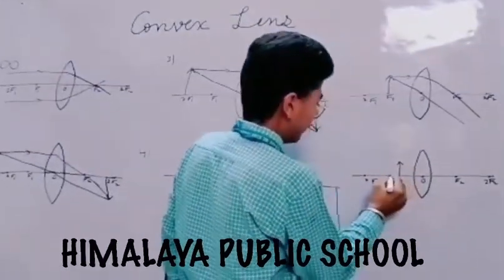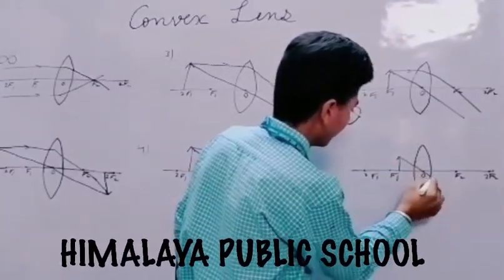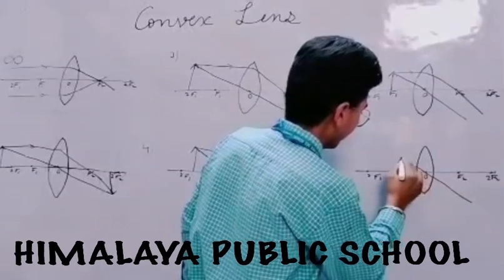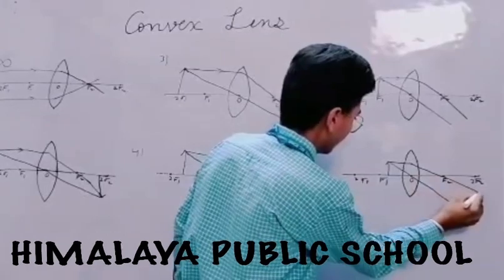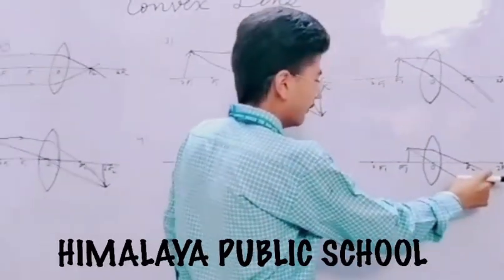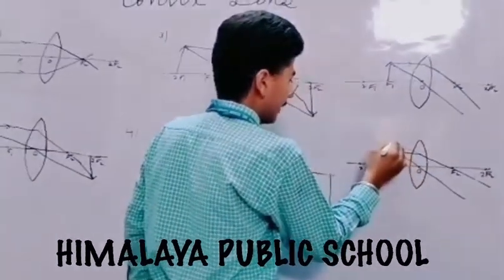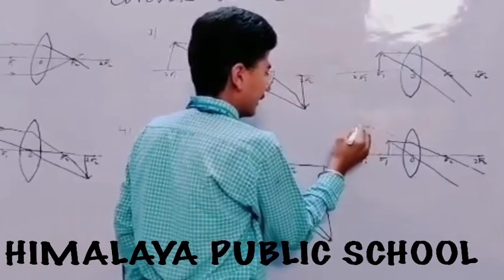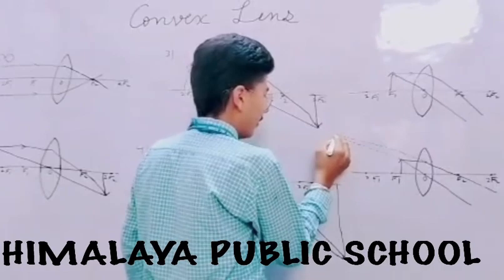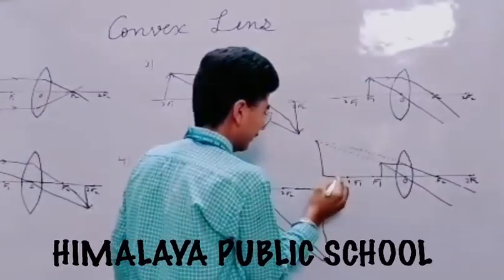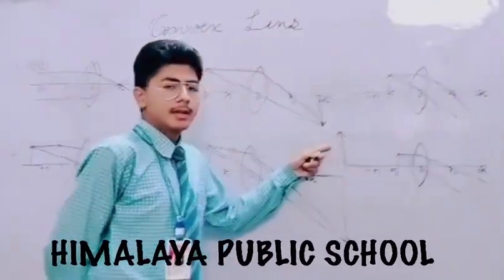The last condition is when the object is placed between the focus and the optical center. The first ray is passing through the optical center and the second ray is coming parallel to the principal axis and passes through the focus. Both rays are diverging from each other; they do not actually meet but appear to meet. Extending both rays, we get that the image will be formed on the same side of the lens. The image is magnified and virtual and erect.